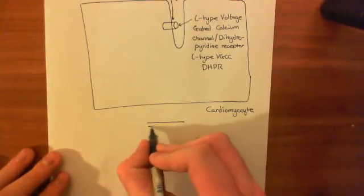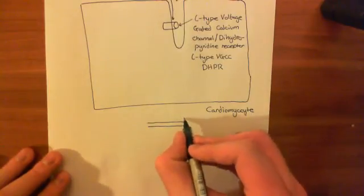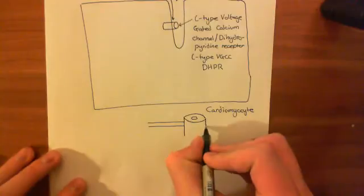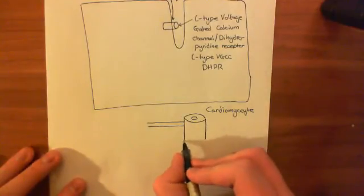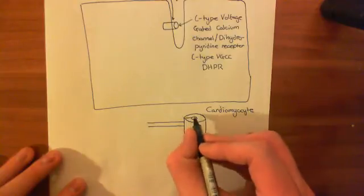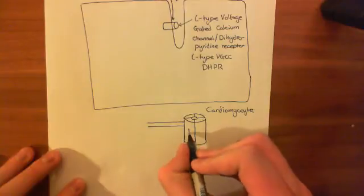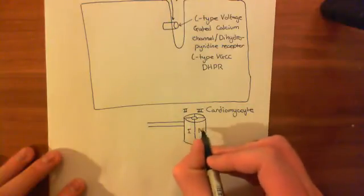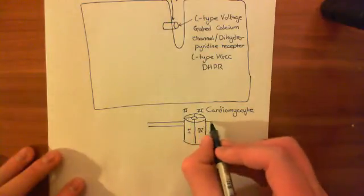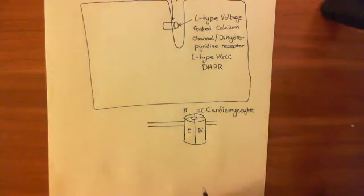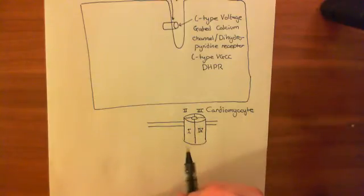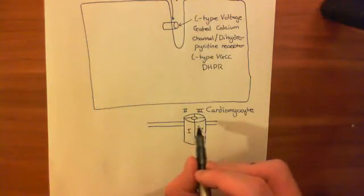This receptor sits in the phospholipid bilayer. The pore-forming subunit, known as the alpha-1 subunit, is often divided into four separate domains: domain 1, domain 2, domain 3, and domain 4. The alpha-1 subunit is a single polypeptide, so these domains are not separate polypeptides — it's one polypeptide that makes up all four domains.